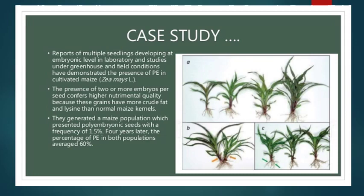Reports of multiple seedlings developing at the embryonic level in laboratory and studied under greenhouse and field conditions have demonstrated the presence of polyembryony in cultivated maize. The presence of two or more embryos per seed confers higher nutritional quality because these grains have more crude fat and lysine than normal maize kernels. A maize population was generated which presented polyembryonic seeds with a frequency of 1.5%. After four years, the percentage of polyembryony in both populations averaged only 60%.